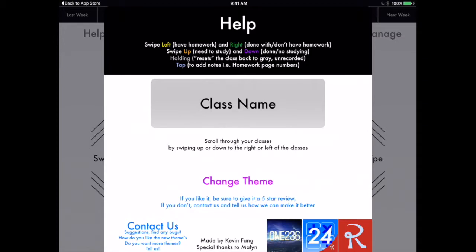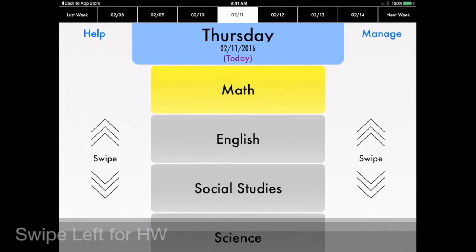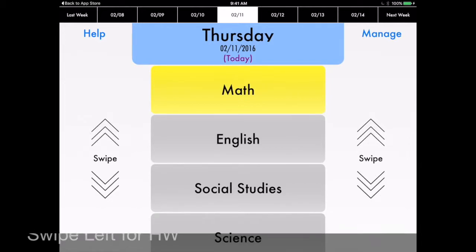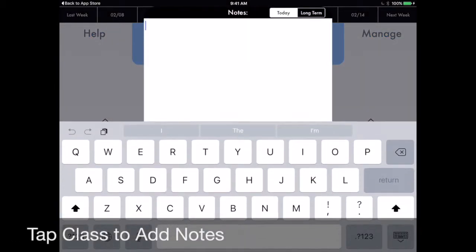You just tap on the class name and you can type it in there. Okay, so we're going to practice a little bit here. Let's say I have math first period and I have some homework in there. I'm going to swipe left, and it's going to turn yellow, indicating that I have homework. I want to type in specifically what I'm supposed to do. So I just tap on math and the notes page pops up.